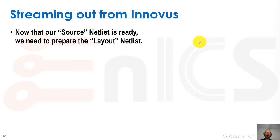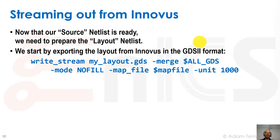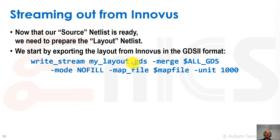Our source netlist is ready, and we need to prepare the layout netlist. We're going to stream out from Innovus — export the layout, which is called streamout. GDS is a stream-type format, so the operation is called streamout, and the command used in Innovus Stylus is called write stream. We give it the name of our layout, mylayout.gds, and we use a merge option and a map file, which I'll discuss in a moment.